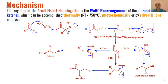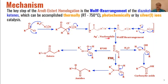These intermediates will be the resonance hybrid of three structures. These diazo compounds, when they are reacted with silver ions in the presence of some nucleophile in the form of solvent — like water, alcohol, or amines — they will undergo Wolff rearrangement, and we will get these types of intermediates which are called ketenes.